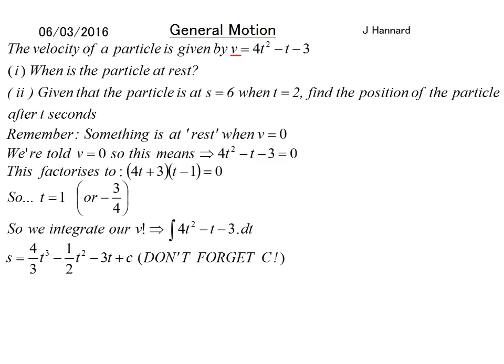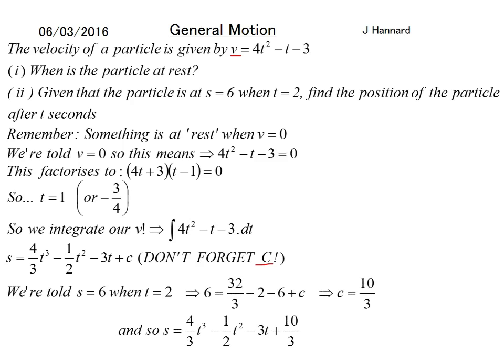Don't forget that C because that is important. We are given that s = 6 when t = 2. So if we set that equal to 6 and put a 2 through, we'll work out C and we'll get C = 10/3. So finally, we write s = 4/3 t³ - 1/2 t² - 3t + 10/3.